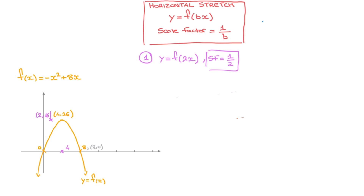Finally, focusing on the origin — coordinates 0, 0 — following this transformation its x-coordinate gets multiplied by 1 half. But since 0 times 1 half is still 0, that point will remain the same. When that happens, we say that that point is invariant to the transformation.